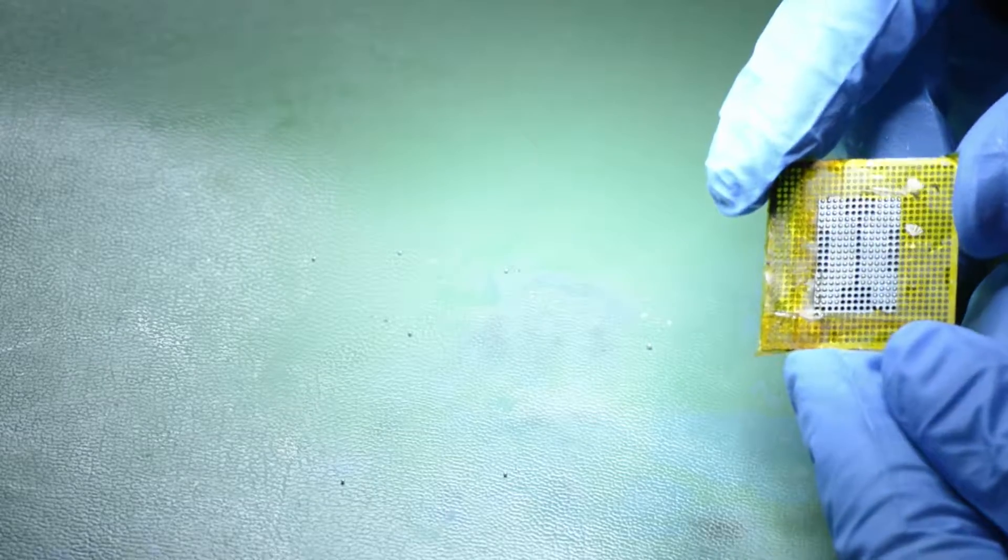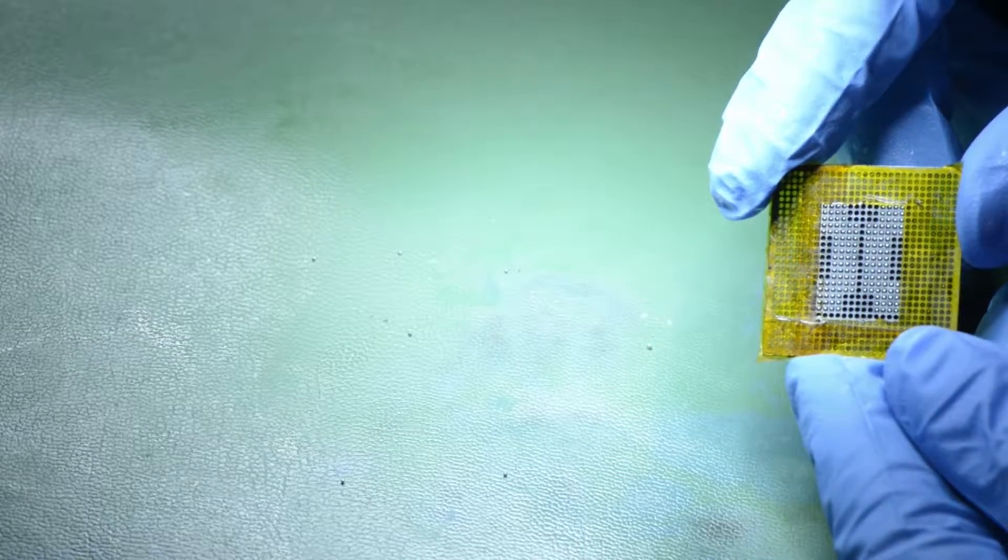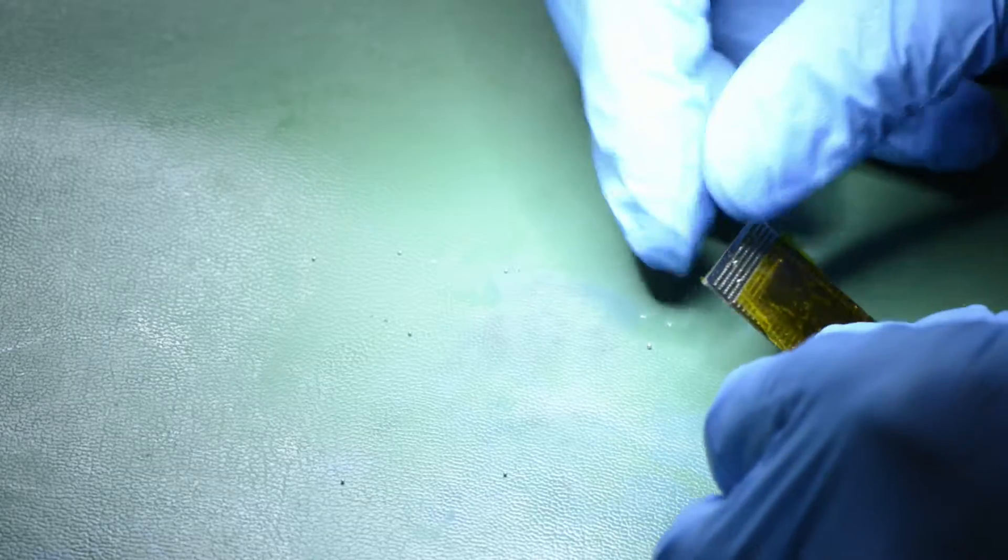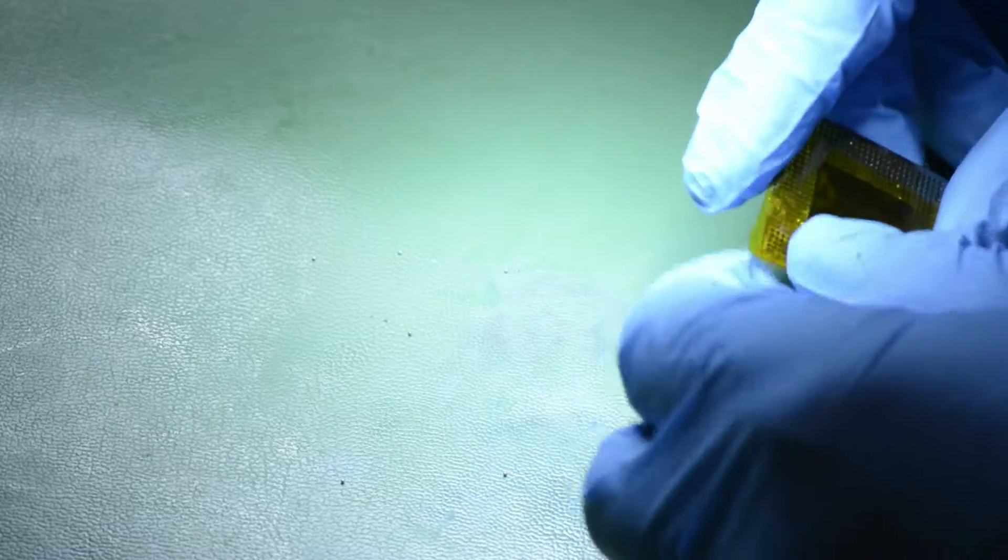Now I've removed the stencil from the jig and put it in an ultrasonic cleaner. I prefer this over alcohol or flux remover because it easily removes excess solder balls and makes removing the Kapton tape securing the chip easier.